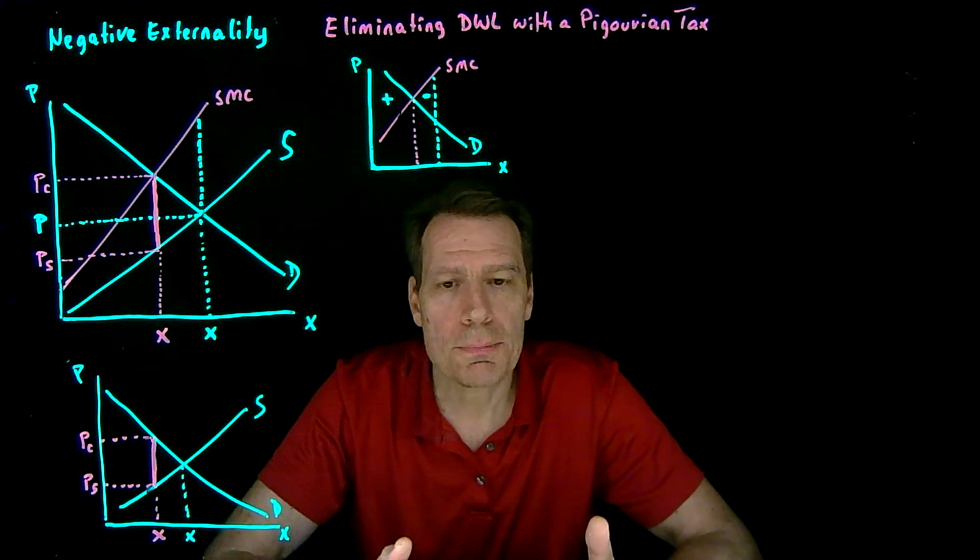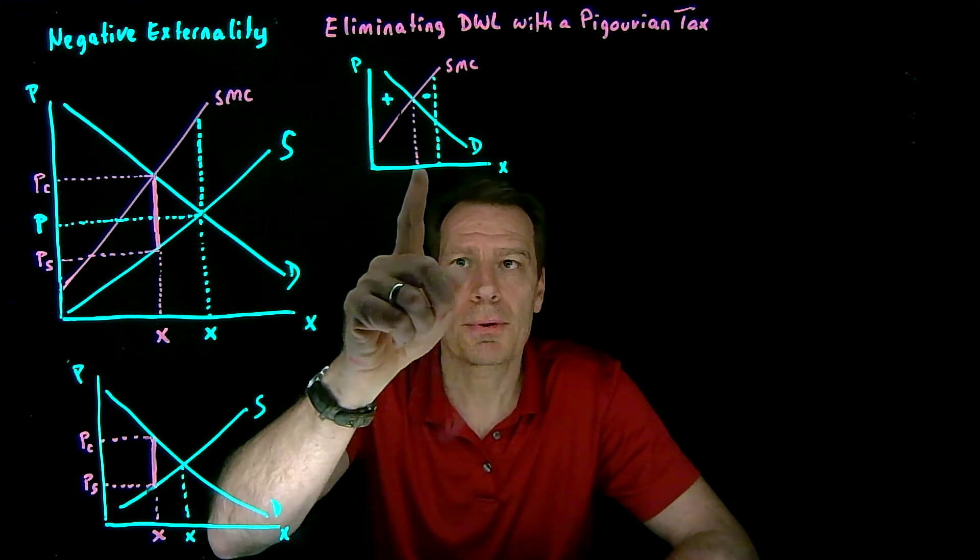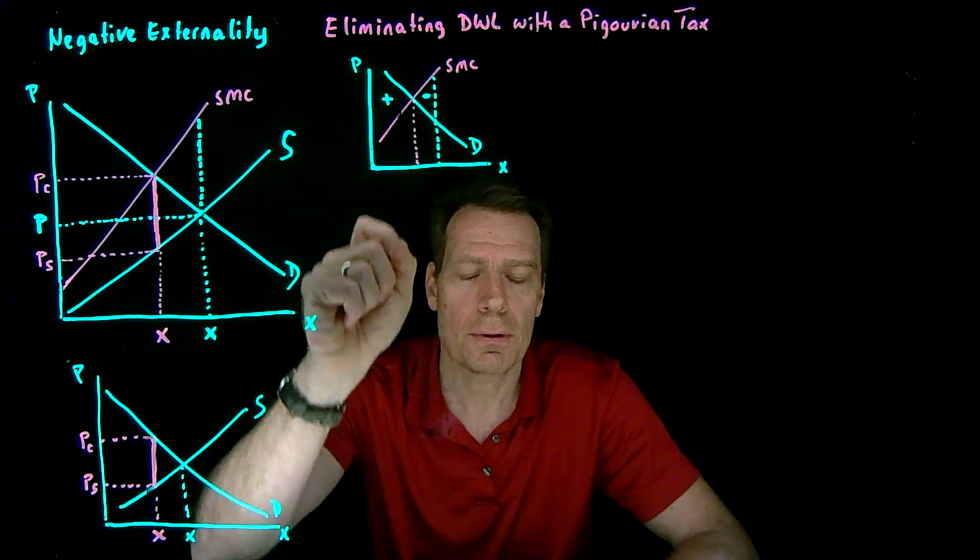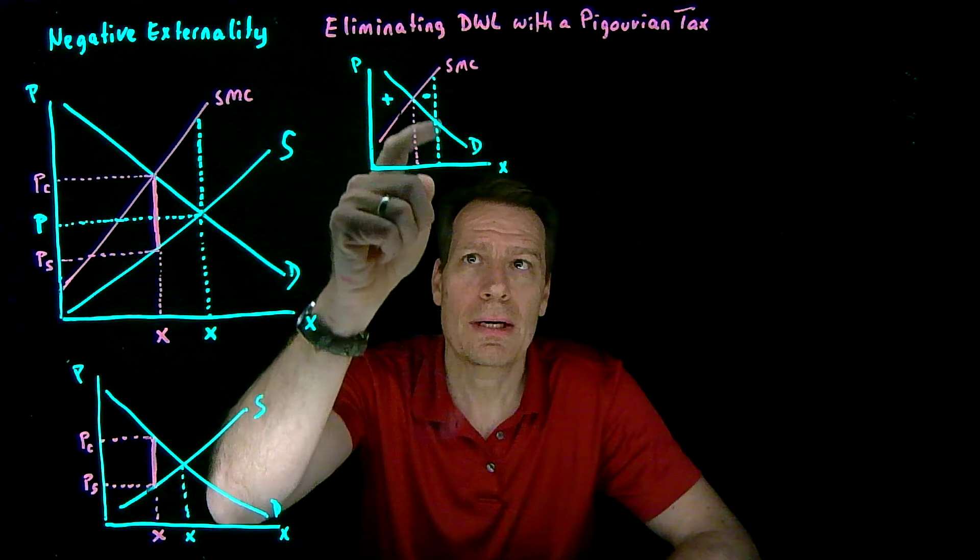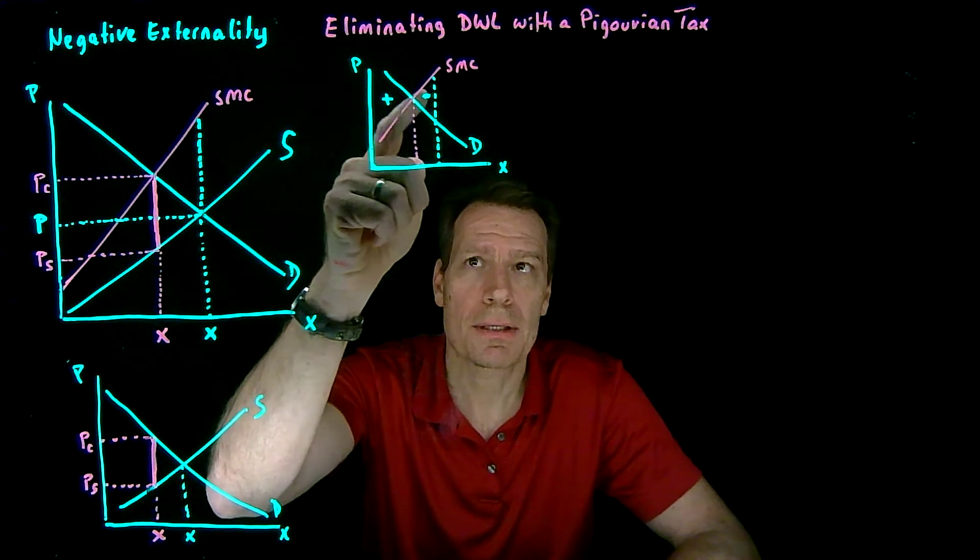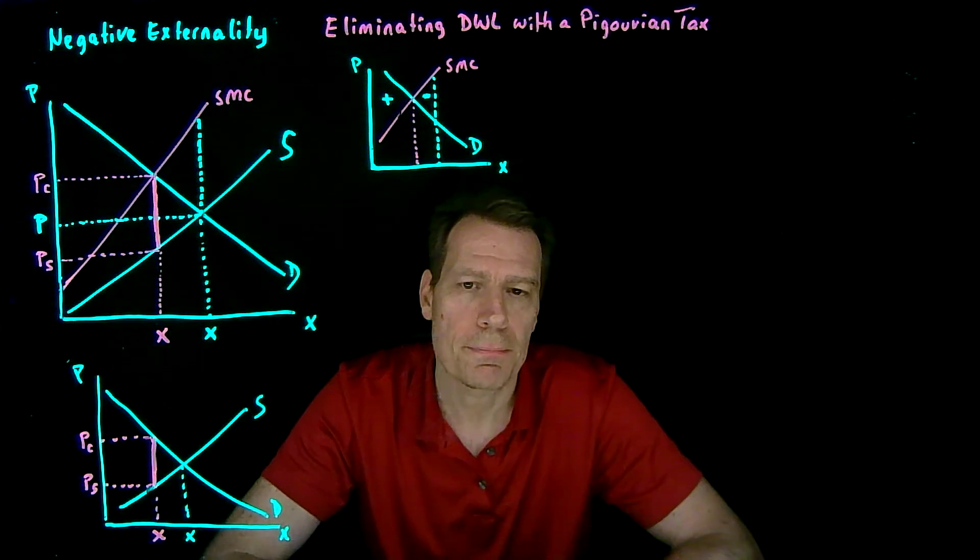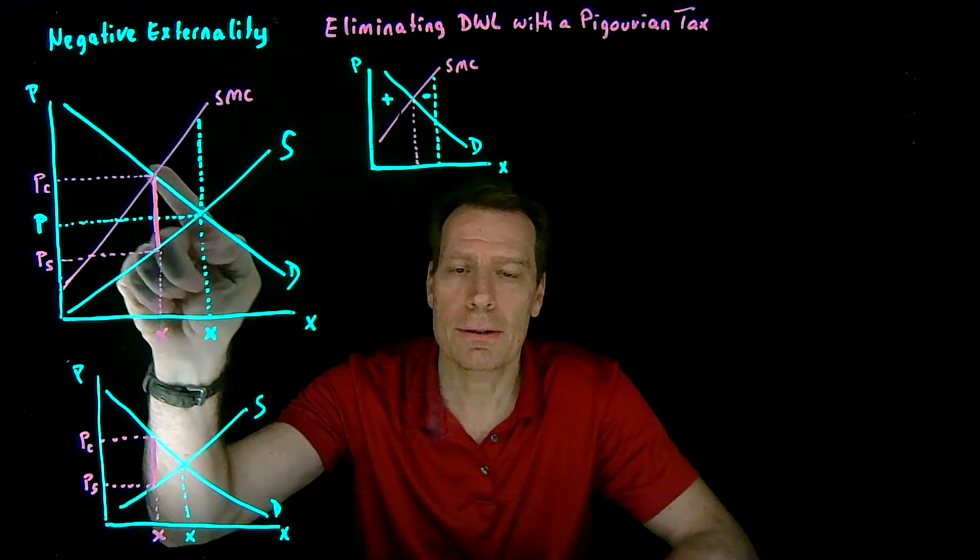As a result, the market is producing too much. It's producing not just up to the optimal quantity, capturing this positive social surplus, but then beyond that, creating negative social surplus where the social marginal cost is larger than the social marginal benefit. That creates a deadweight loss triangle, which is this triangle here.